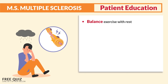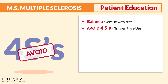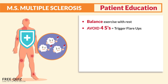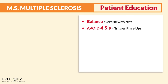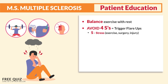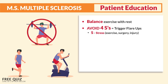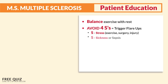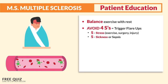Stress is a trigger for M.S. — typical for all autoimmune diseases. Avoid the four S's that trigger flare-ups. The first S is stress, which includes exercise, surgery, and even injury. The big one here: don't overdo the workouts — no marathons and no intense hardcore workouts.